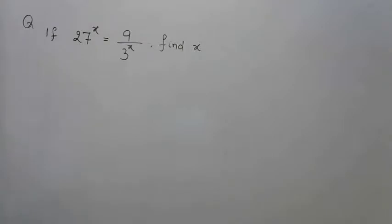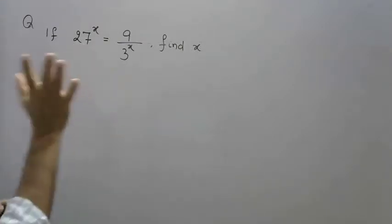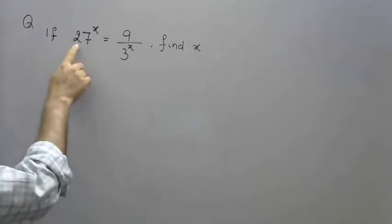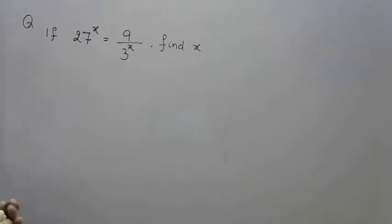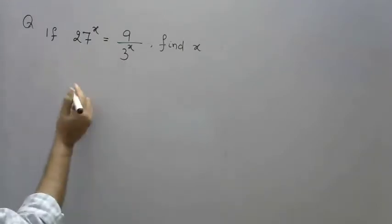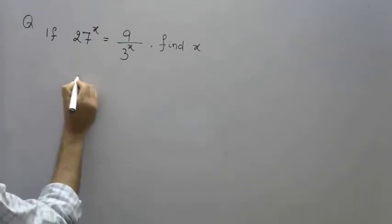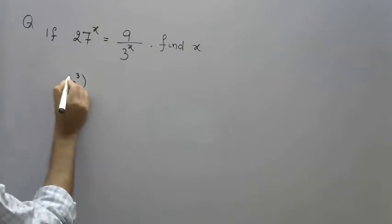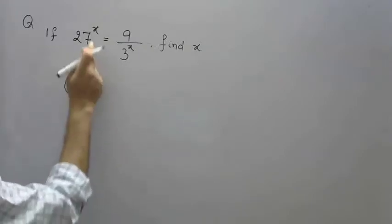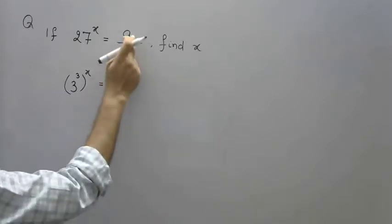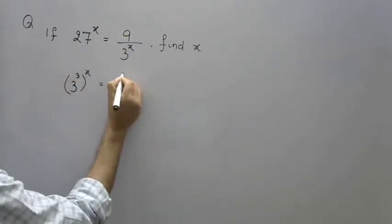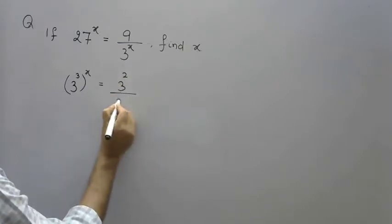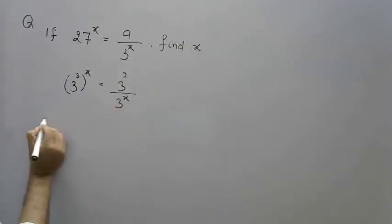How do we do this? We can break it into parts. If 27 equals 3^3, then we can write 3^(3x) equals 9/3^x. When we solve this,